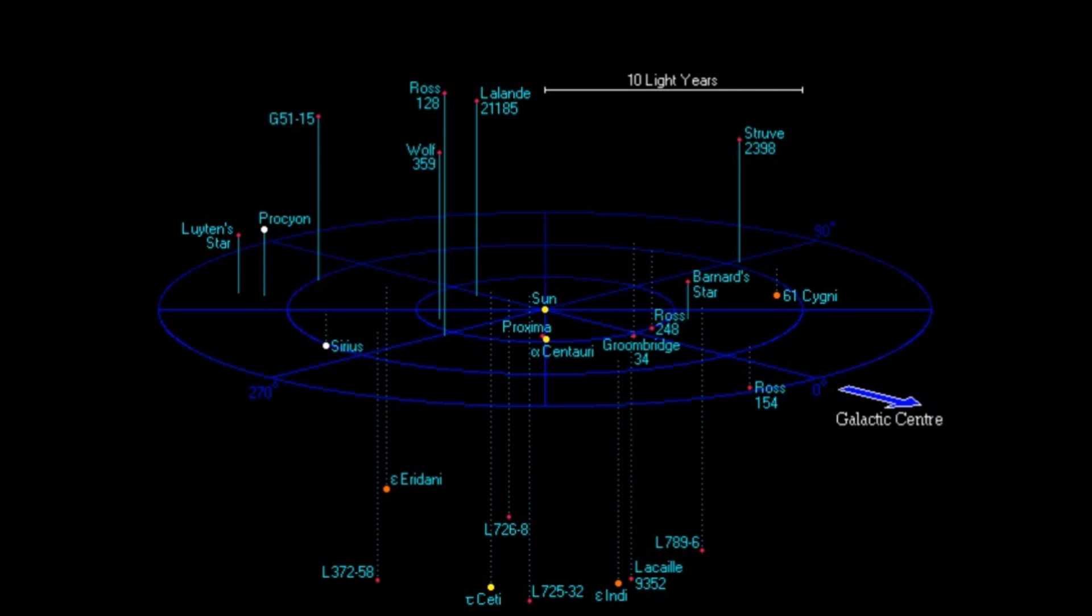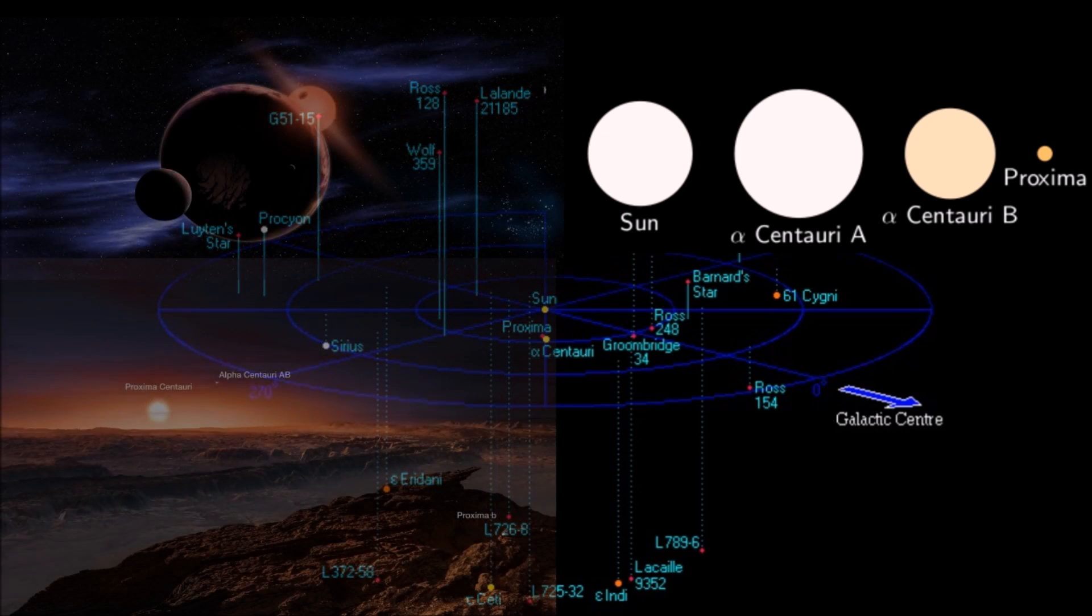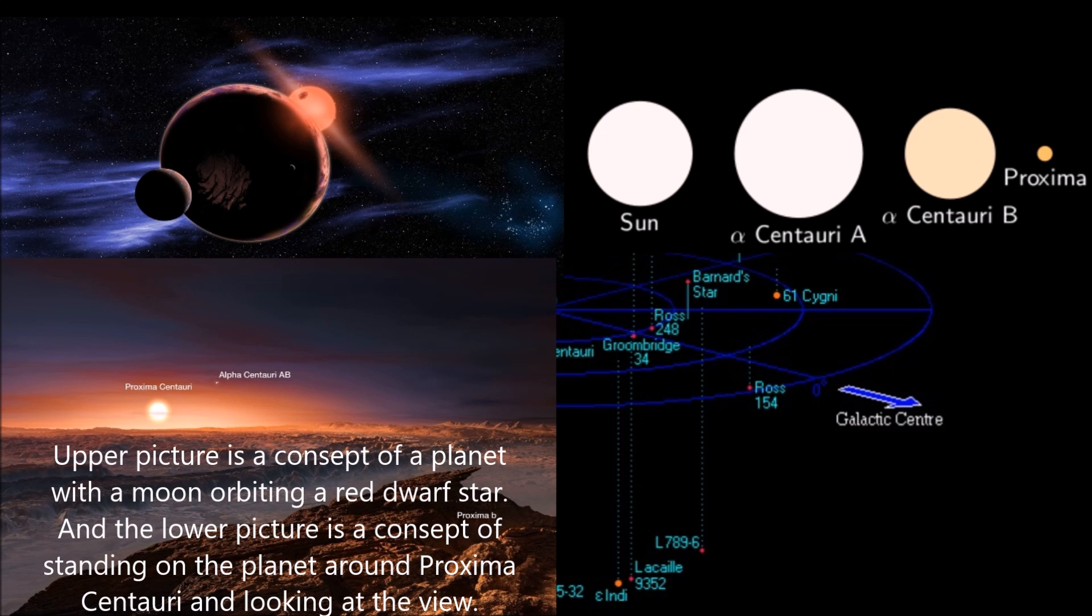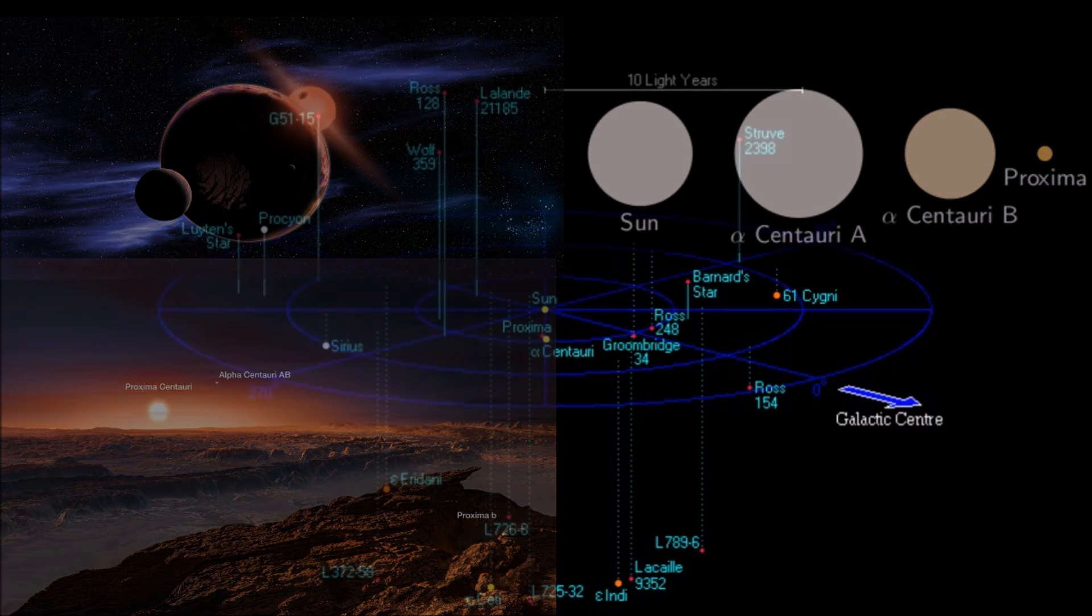The first big neighbor main sequence stars is Alpha Centauri, and it's Alpha Centauri A and B. It has a red dwarf neighbor called Proxima Centauri, and Proxima Centauri is 4.2 light years away. Proxima Centauri has recently been in the news because they found a planet around it.